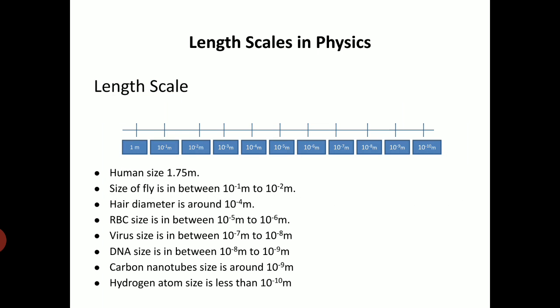If we look into the length scale from 1 meter to 10 to the power of minus 10 meter, if we look into the different sizes, human size is of 1.75 meter and size of the fly is in 10 to the power of minus 1 meter to 10 to the power of minus 2 meter. Hair diameter is of the order of 10 to the power of minus 4 meter. RBC size is in between 10 to the power of minus 6 meter.